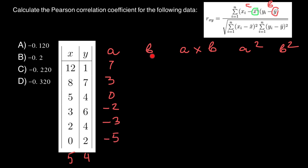For column B, we take numbers from column Y minus Ȳ, which is the mean of four. So: 1 minus 4 is negative 3, 7 minus 4 is 3, 4 minus 4 is 0, 6 minus 4 is 2, 4 minus 4 is 0, and 2 minus 4 is negative 2.